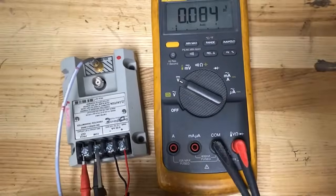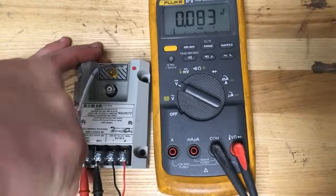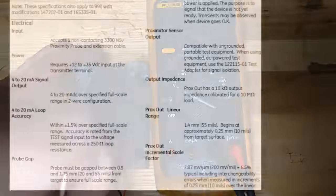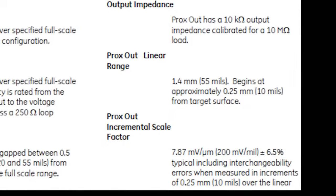Place the multimeter test leads on the terminals, which represent the gap voltage. To determine the proper gap voltage setting, you will have to refer to the spec sheet of the proximity probe you are testing.